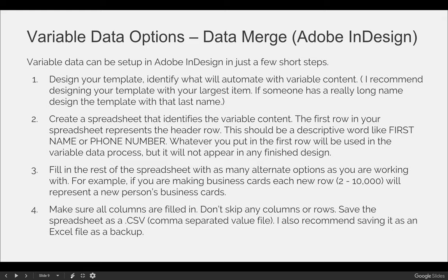The third step is to fill in the rest of the spreadsheet with as many alternate options as you're working on. For example, if you're making business cards, each new row from row two onward represents a new person. Every column needs to be filled out — if you have columns for first name, last name, phone number, address, and email, that's five columns and every single one needs to be filled in. If you leave a field empty or accidentally skip a field, you're going to have issues when you automate your process.